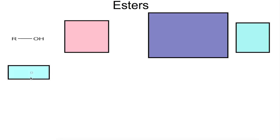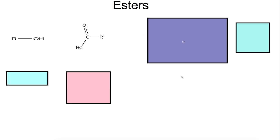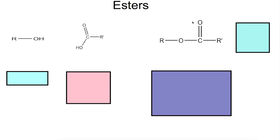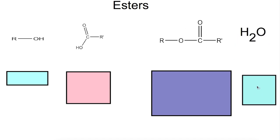The reaction to form esters requires two molecules with different functional groups: the alcohol group and the carboxylic acid group. When these two come together they join to form the carboxylate or ester link, and in the process you also lose a molecule of water. That makes this process a condensation reaction.